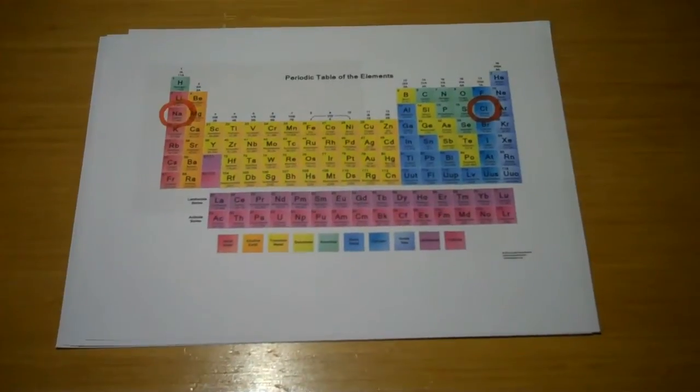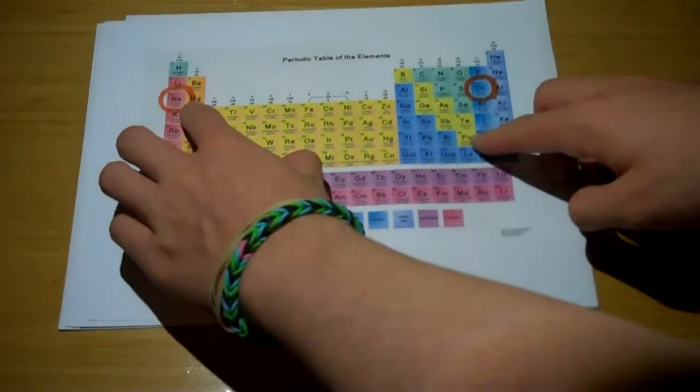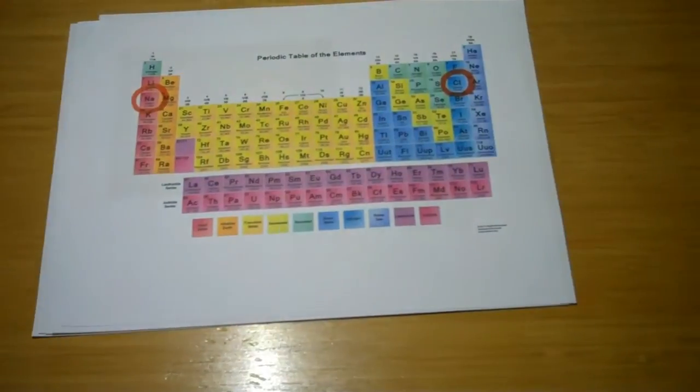The sodium chloride compound forms by the ionization of the sodium and chlorine atoms and the attraction of the resulting ions.